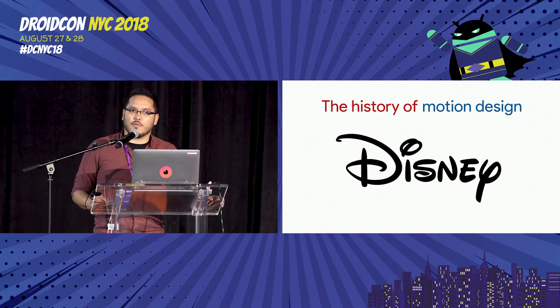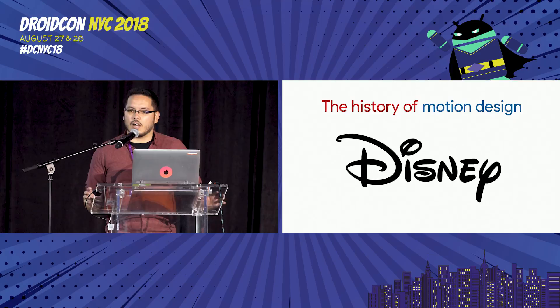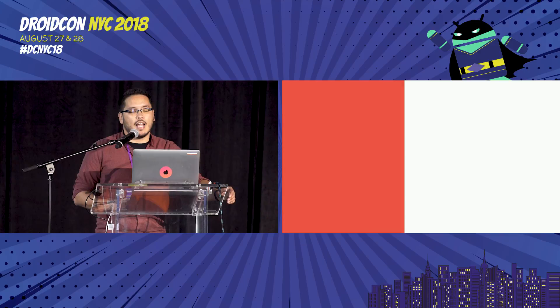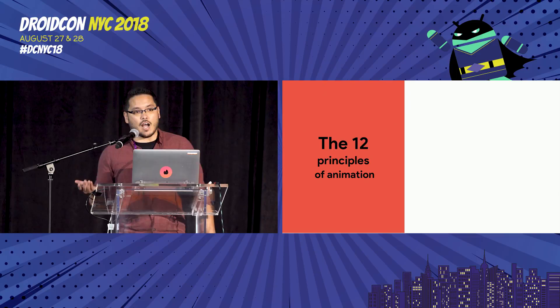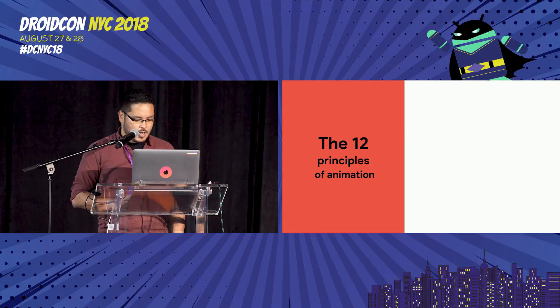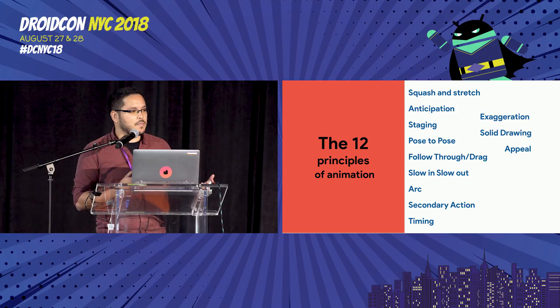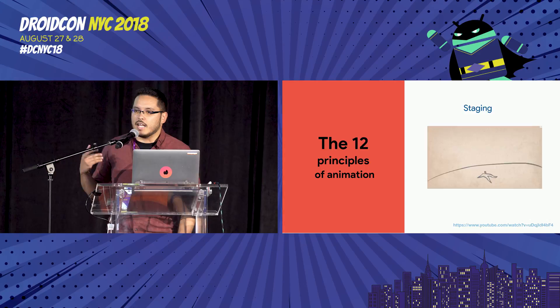Disney was a really groundbreaking company. They really changed the game when it came to motion. They came up with a lot of principles and new information, and figured out how to do animation in the best way possible. They came up with something called the 12 Principles of Animation. There's even a book about it. I selected some of them because you can really see how material design inspired itself in those principles to create the animations and motion design we have today.